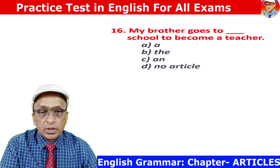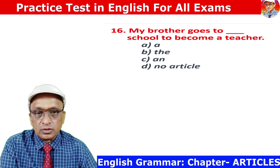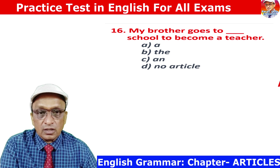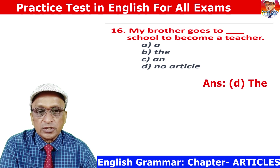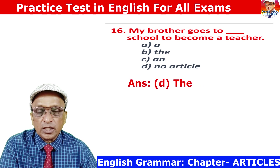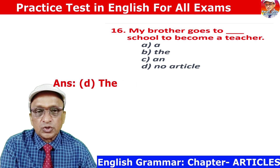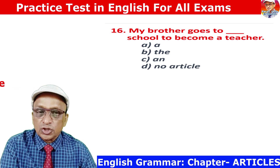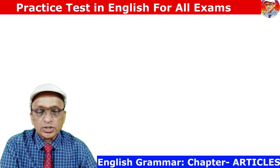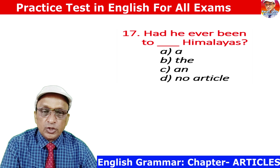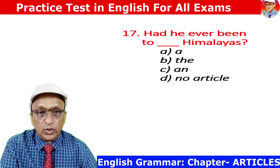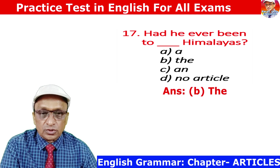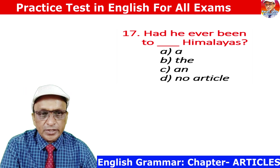Question 16: My brother goes to school to become a teacher. The brother is going to school not to learn but to do something different, so no article is to be used. Answer is D. Note: if a student is going to school for learning, then 'the school' is used. Question 17: Had he ever been to the Himalayas? The Himalayas is a unique mountain range, so THE is to be used. Answer is B.